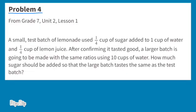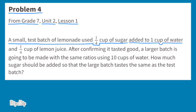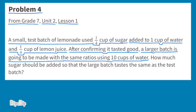Problem number four, from seventh grade, unit two, lesson one. A small test batch of lemonade used one-fourth cup of sugar added to one cup of water and one-fourth cup of lemon juice. After confirming it tasted good, a larger batch is going to be made with the same ratio using 10 cups of water. How much sugar should be added so that the large batch tastes the same as the test batch?